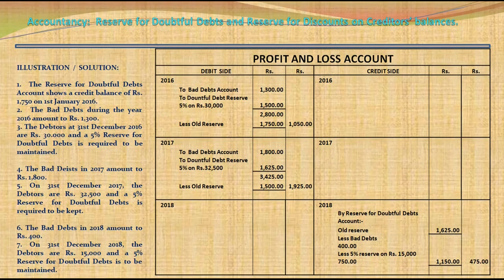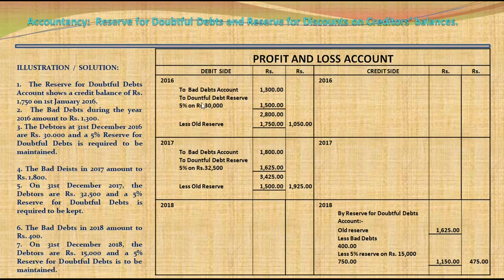Now let us see how these items are recorded in the Profit & Loss Account. For 2016: bad debts account Rs. 1,300 plus new doubtful debts reserve (5% of Rs. 30,000) Rs. 1,500, totaling Rs. 2,800. Less old reserve of Rs. 1,750. The net expense charged to Profit & Loss Account for 2016 is Rs. 1,050. For 2017: bad debts Rs. 1,800 plus new reserve on Rs. 32,500 at 5% = Rs. 1,625, totaling Rs. 3,425. Less old reserve of Rs. 1,500 gives a net loss of Rs. 1,925 charged to Profit & Loss Account for 2017.